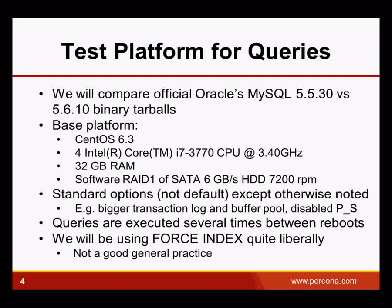Even if this wasn't a benchmark, I executed the queries several times between reboots to ensure consistent results. I executed alternately the 5.6 queries, the 5.5 queries, and the 5.5 queries in 5.6 with the feature disabled. I then used an average and the median to confirm stable results.